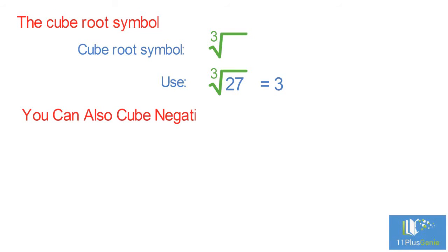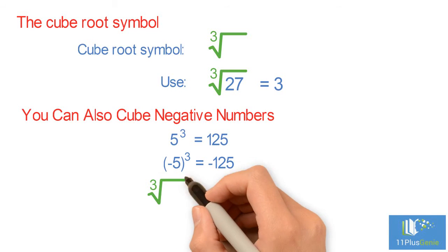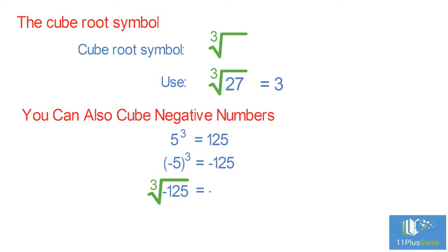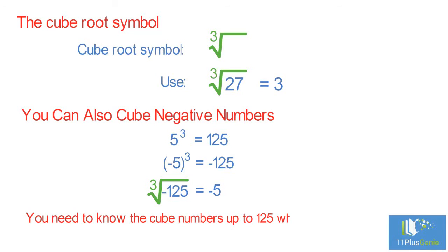You can also cube negative numbers. Have a look at this. When we cube 5, we get 125. 5 times 5 times 5 equals 125. When we cube minus 5 we get minus 125. Minus 5 times minus 5 times minus 5 equals minus 125. So the cube root of minus 125 is minus 5. You need to know the cube numbers up to 125, which is 5 times 5 times 5.